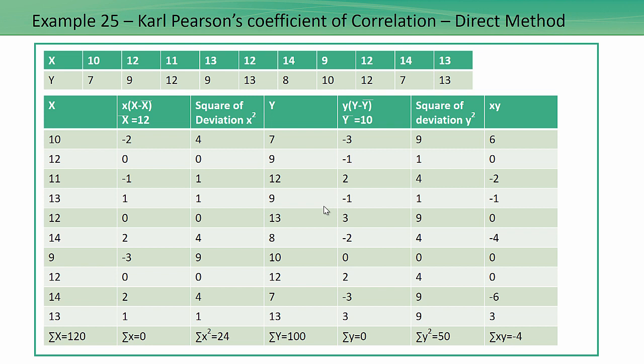We are going to do problems on finding out Karl Pearson's coefficient of correlation. There are three methods to do that. First, we are going to use the direct method. Here I have the X and Y values, and the first thing is we have to make a table. The first column is my X values listed down. Then I will find out small x, which is X minus X-bar, so we will have to calculate X-bar first. Then we will square this column and list it down.